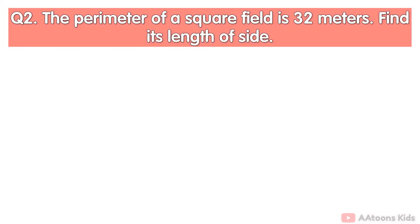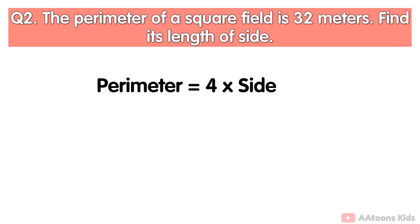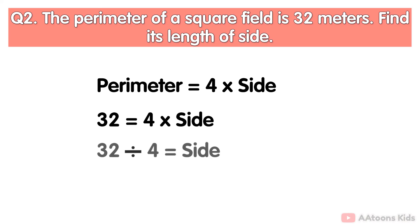Example 2: the perimeter of a square field is 32 meters, find the length of the side. Perimeter of a square equals 4 multiplied by side length. We have the perimeter value of 32 meters. Put the perimeter value in the formula, then transfer 4 to the right-hand side to divide 32.